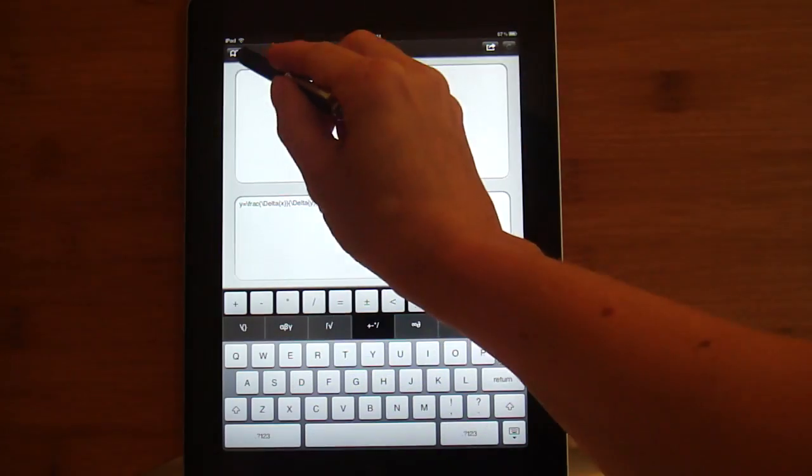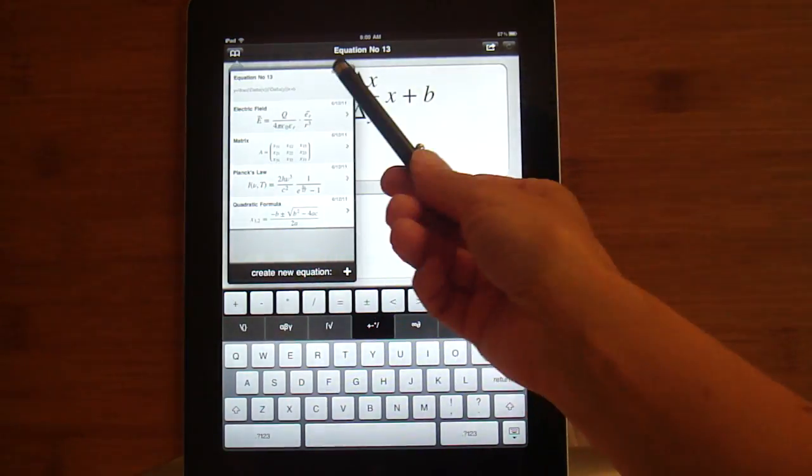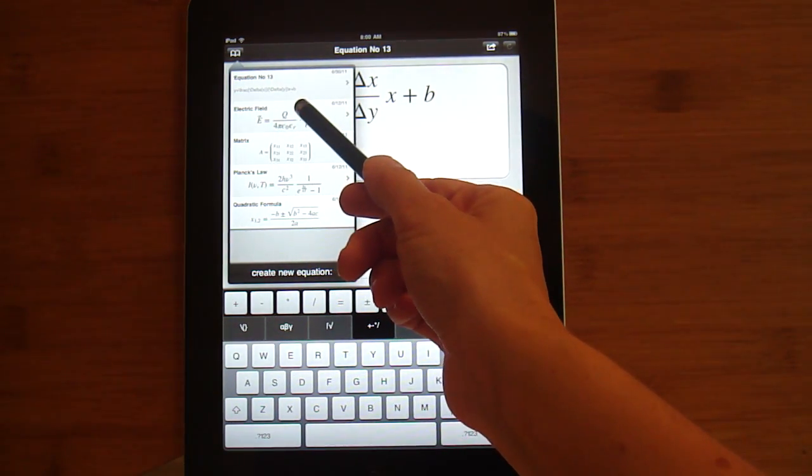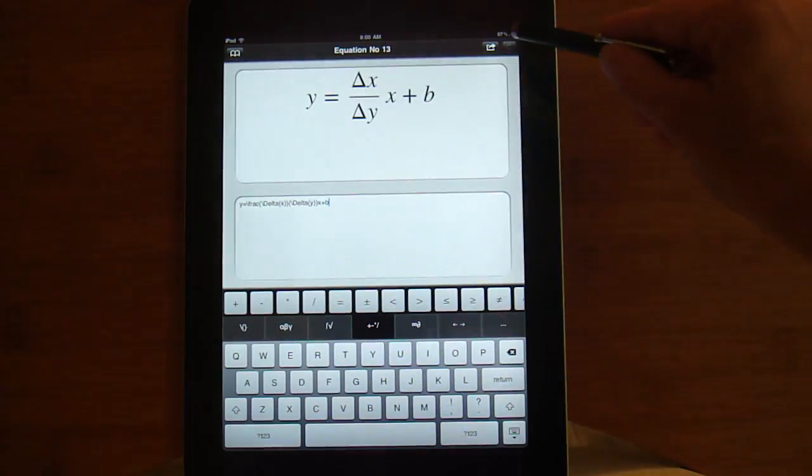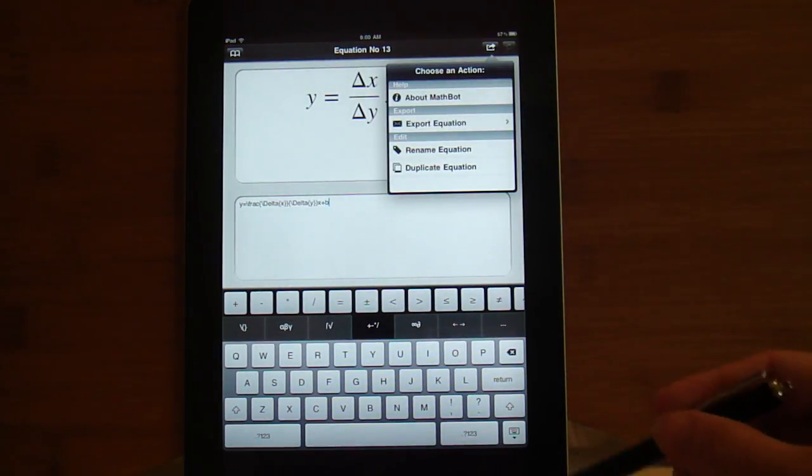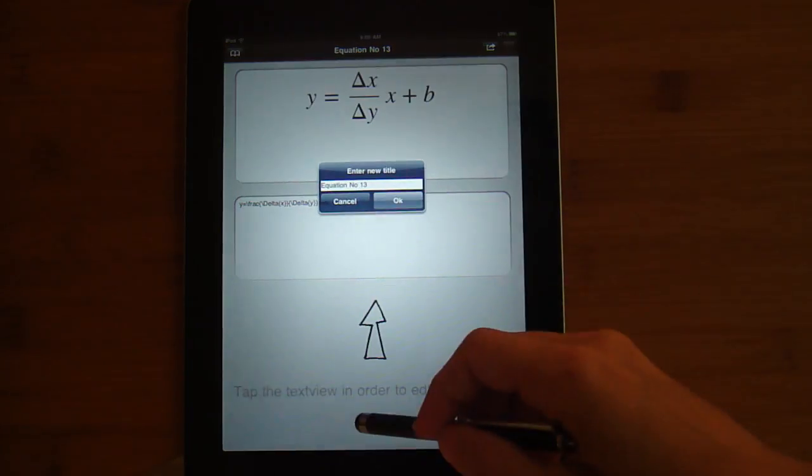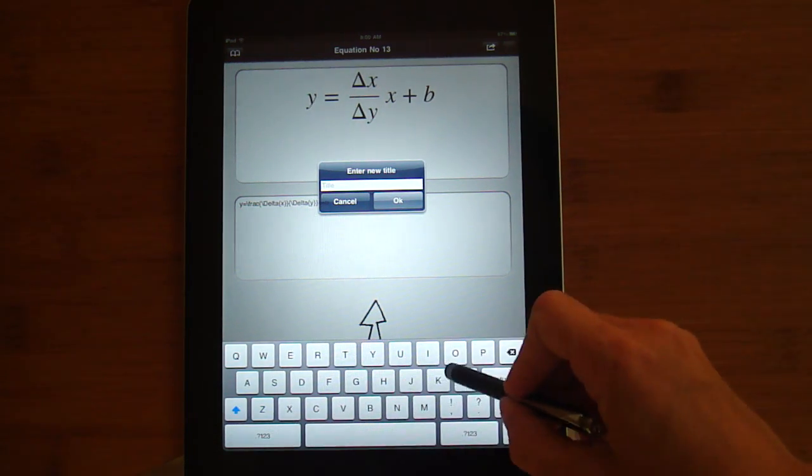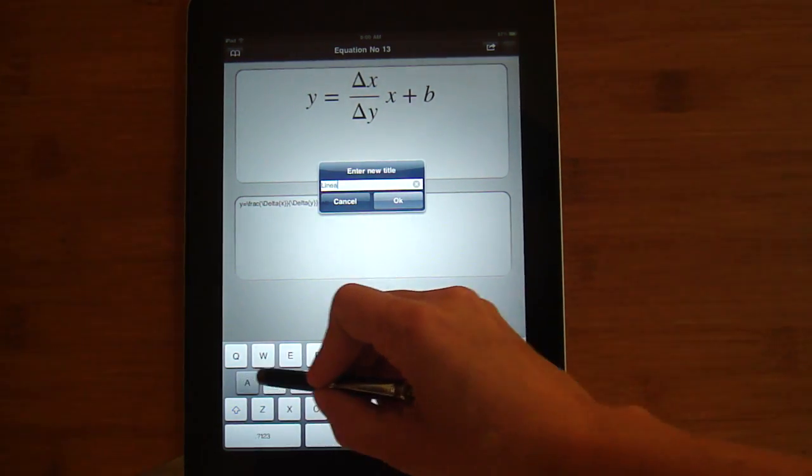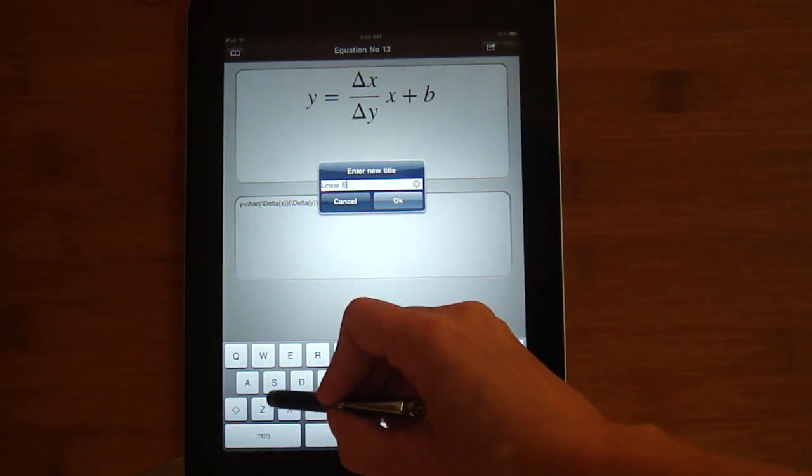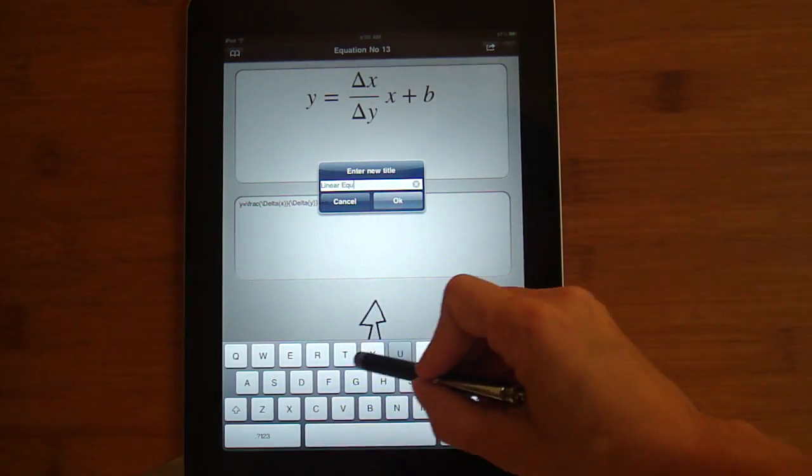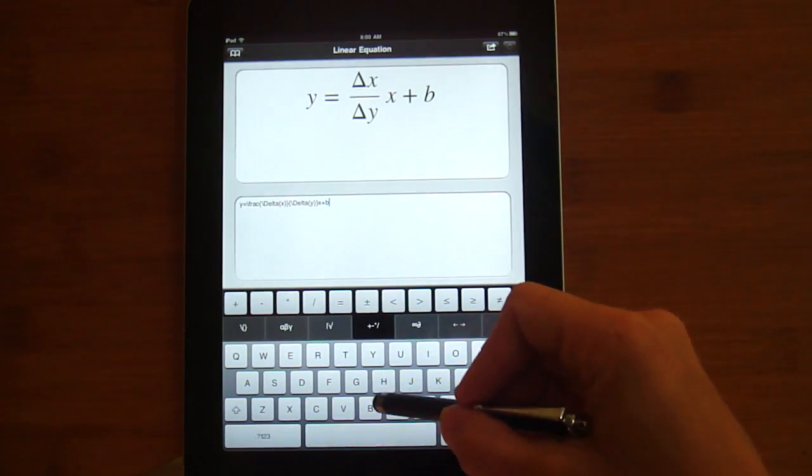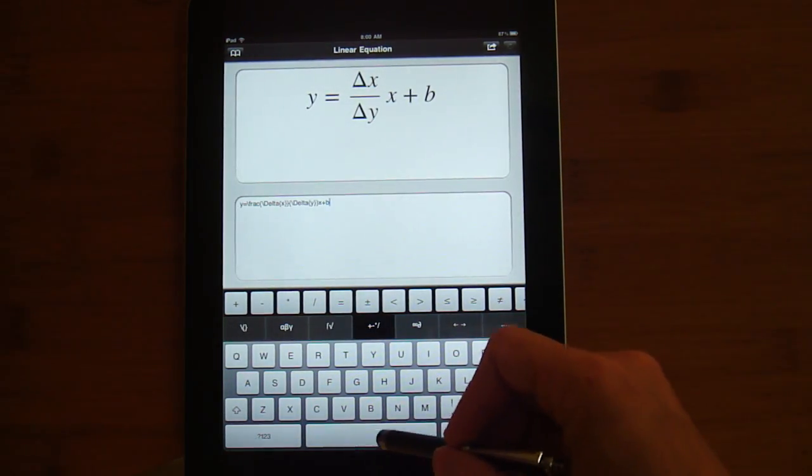Now if I go to the menu right now, it's got that equation but it hasn't been rendered yet. I learned through trial and error that I want to change the name. Instead of equation number 13, I'm going to call it linear equation.